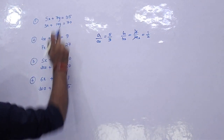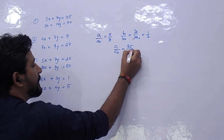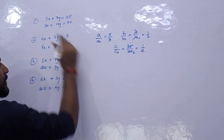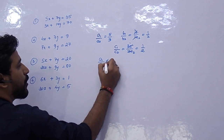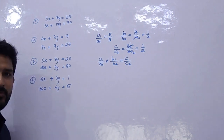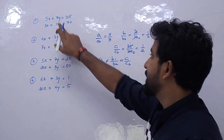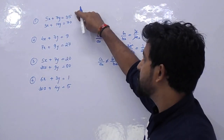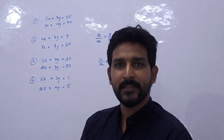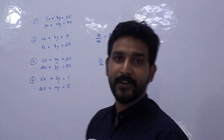Now taking the constant value ratio, c1 upon c2 is 35 by 70, which is also 1 by 2. So in this equation we are getting that a1 upon a2 is not equal to b1 upon b2, but b1 upon b2 is equal to c1 upon c2. Whenever you get this type of question where the ratio of coefficient of y equals the ratio of constant values but not equal to a1 upon a2, you can directly take the value of x as 0 and find the value of y.